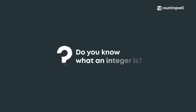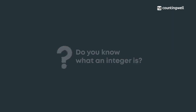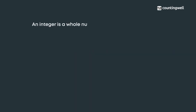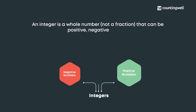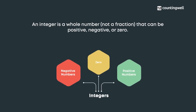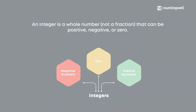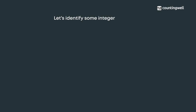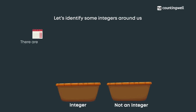Do you know what an integer is? An integer is a whole number, not a fraction, that can be positive, negative, or zero. Let's identify some integers around us. There are 12 months in a year — 12 is an integer.